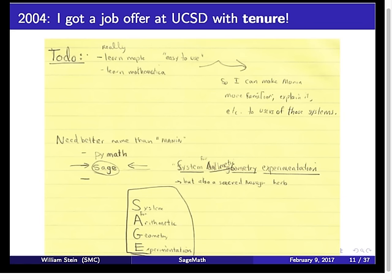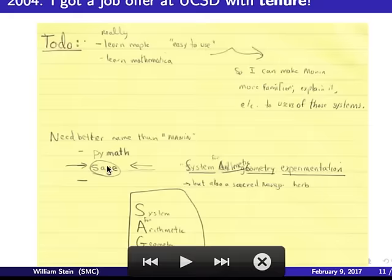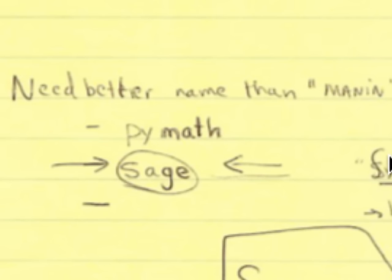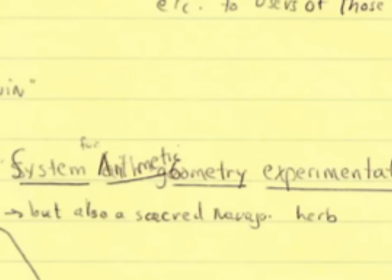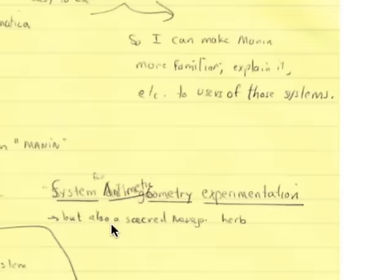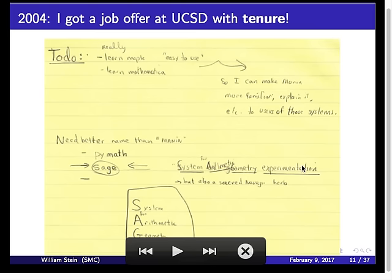In 2004, there was a really clear wave of success in open source — Linux was doing really well on the server, and LaTeX was doing well. I was scribbling on a little piece of paper at a conference, and that's when I came up with the name SAGE. I was writing software and calling it Manin, after the Russian mathematician who inspired a lot of the algorithms I worked on. Then I thought of Pi Math and SAGE — System for Arithmetic Geometry Experimentation. My wife is Navajo, and I see a lot of sage around because it's a sacred Navajo herb, so I thought: okay, SAGE. That's where the name comes from, in late 2004.